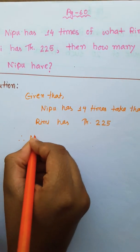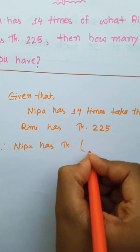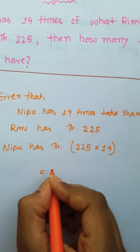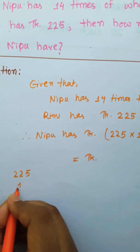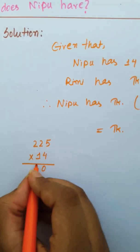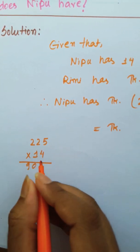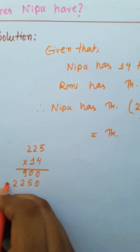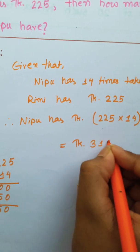Rimi has 225 tucker. Therefore Nipu has 225 x 14 tucker. Calculating: 5 fours are 20, carry 2; 2 fours are 8 plus 2 is 10; then 5 ones, 2 ones, 2 ones — giving 3150 tucker.